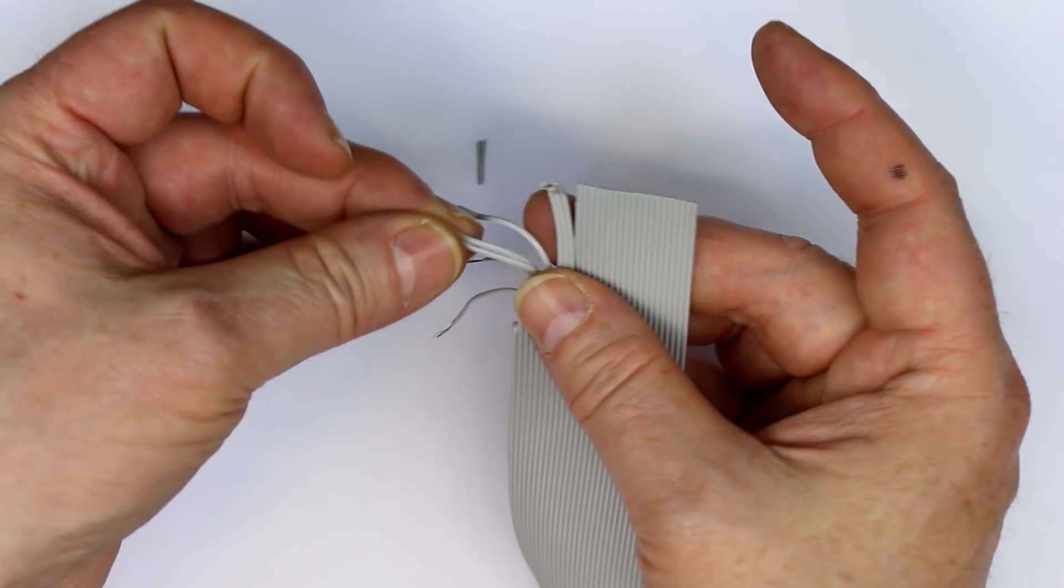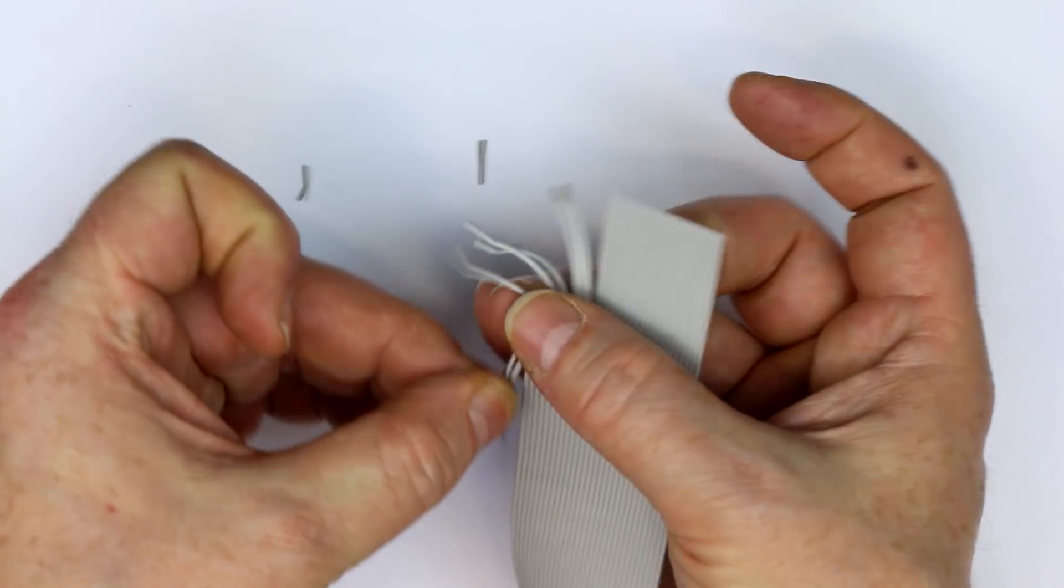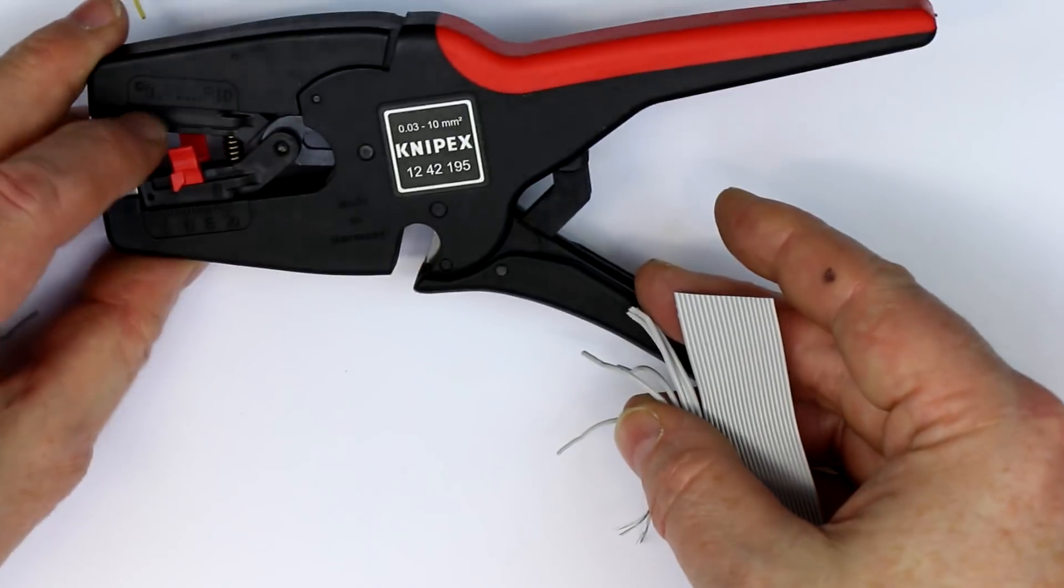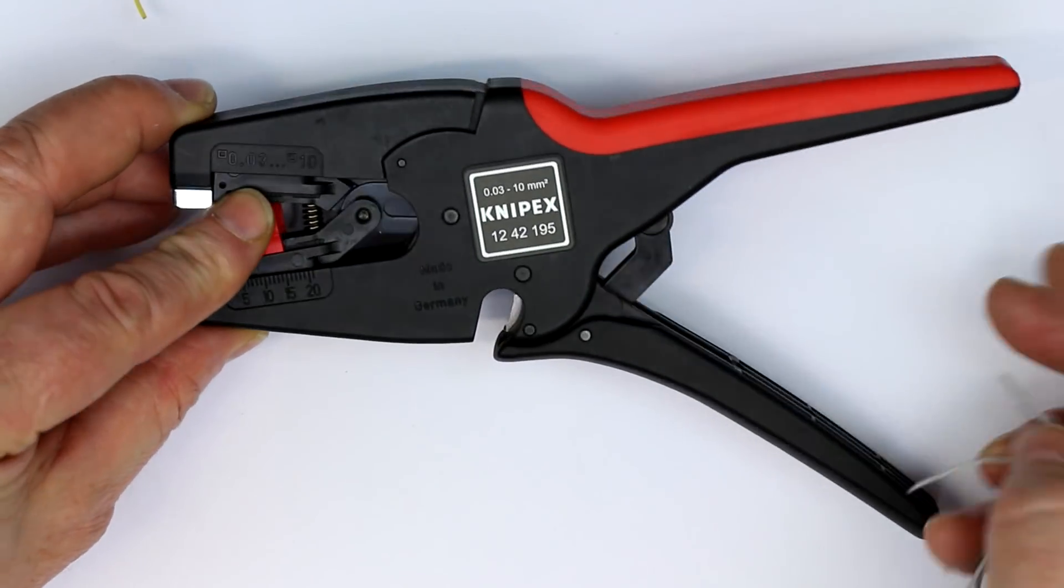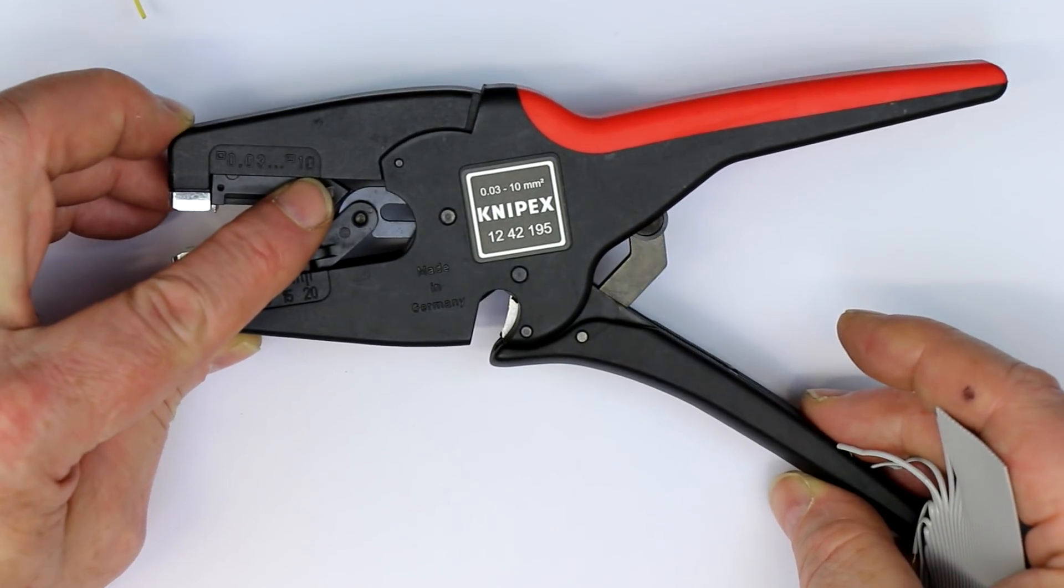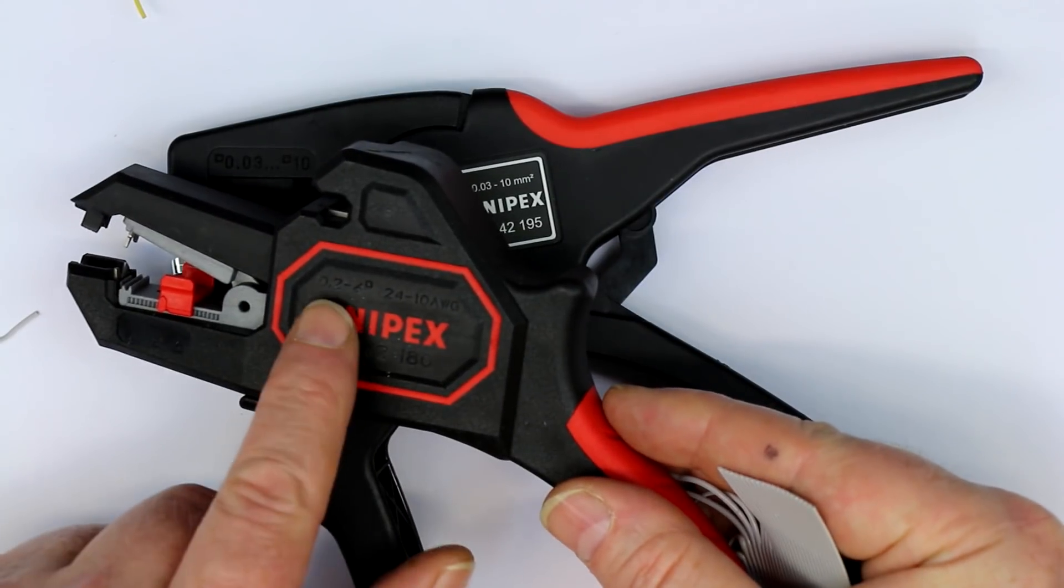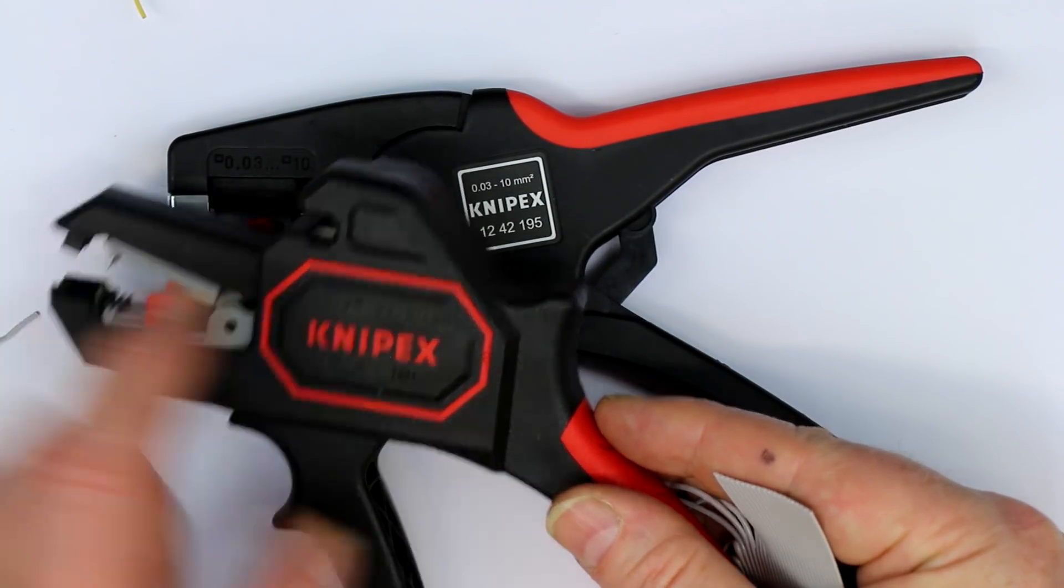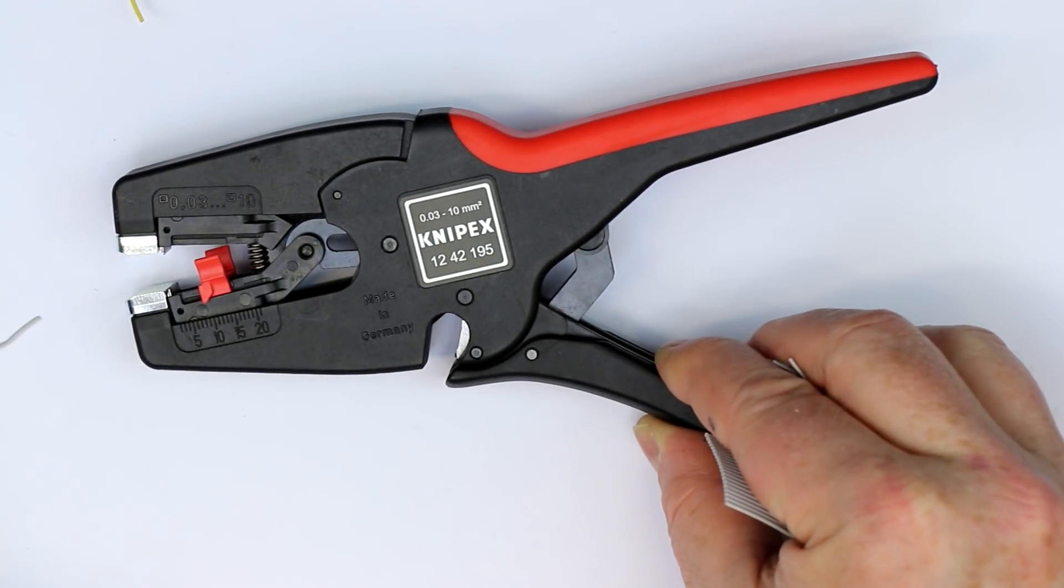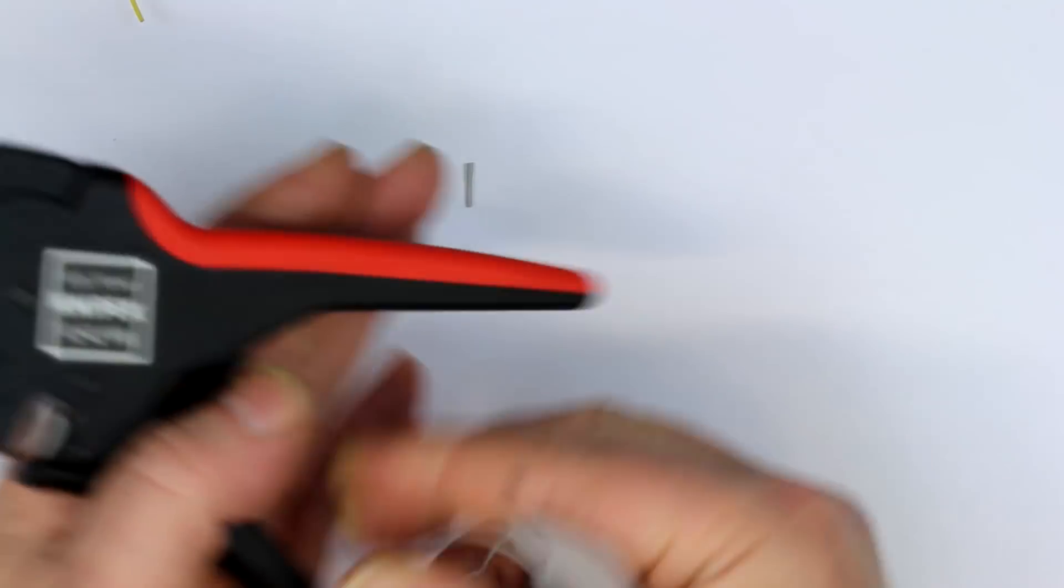Now, let's try the more expensive KNIPEX. Which, by the way, has a range from 0.03 square millimeters up to 10 square millimeters, while this one here goes from 0.2 up to 6 square millimeters. So the range where it is set to make a good stripping action is much larger.